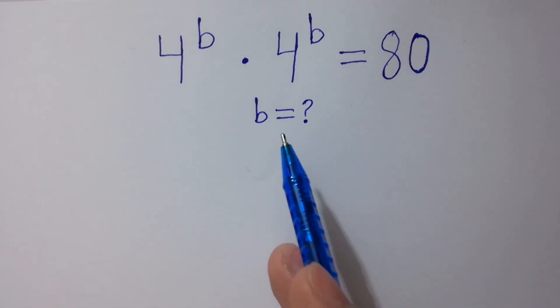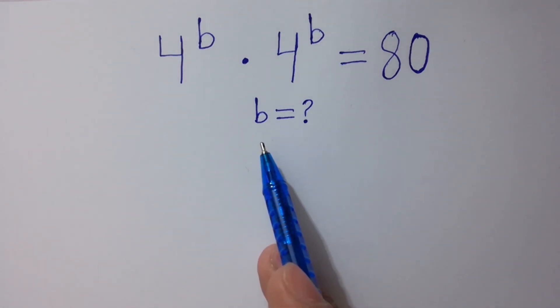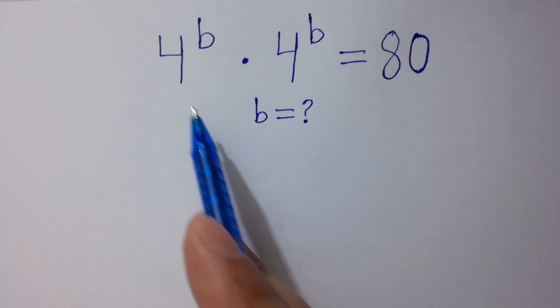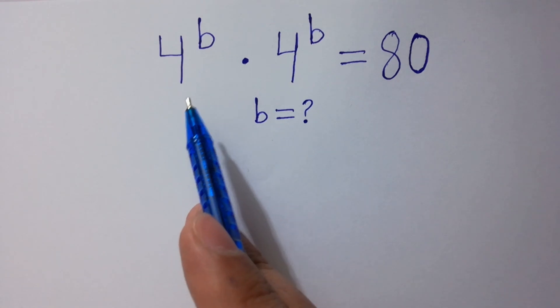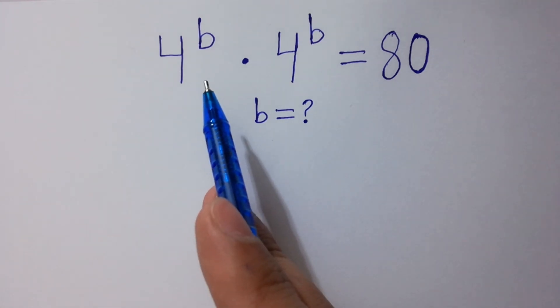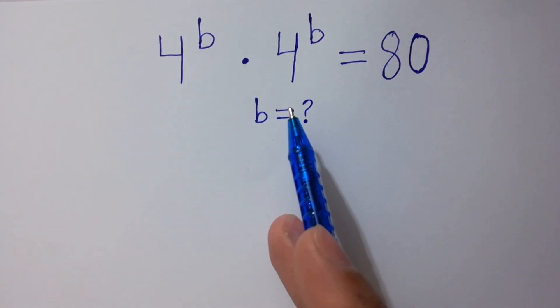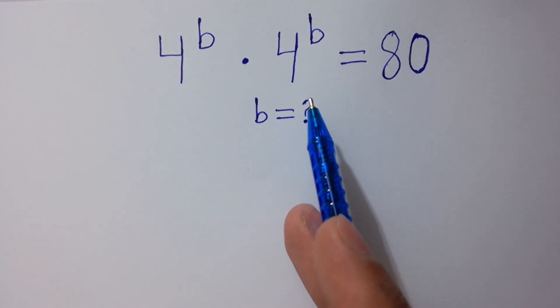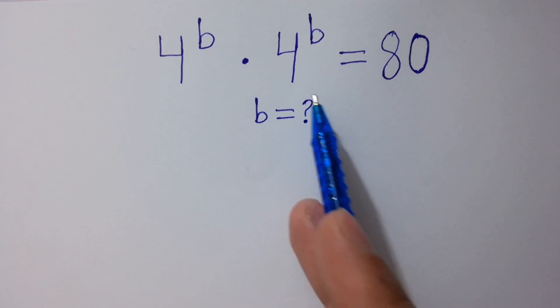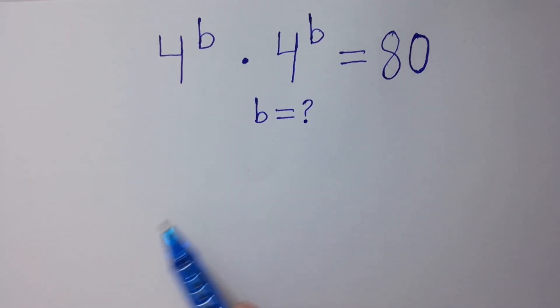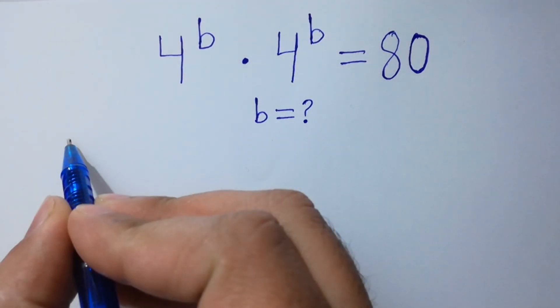Hello friends. Find the value of B if 4 to the power B times 4 to the power B equals 80. Let's have a solution.